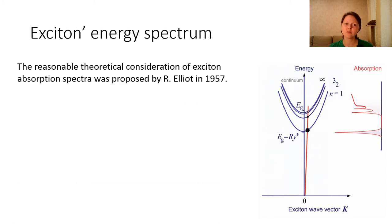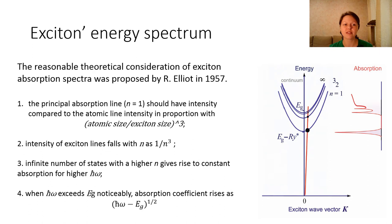The reasonable theoretical consideration of exciton absorption spectra was proposed by Elliott in 1957. He formulated four principles. The principal absorption line at n equal to unity should have intensity compared to the atomic line intensity in this proportion.